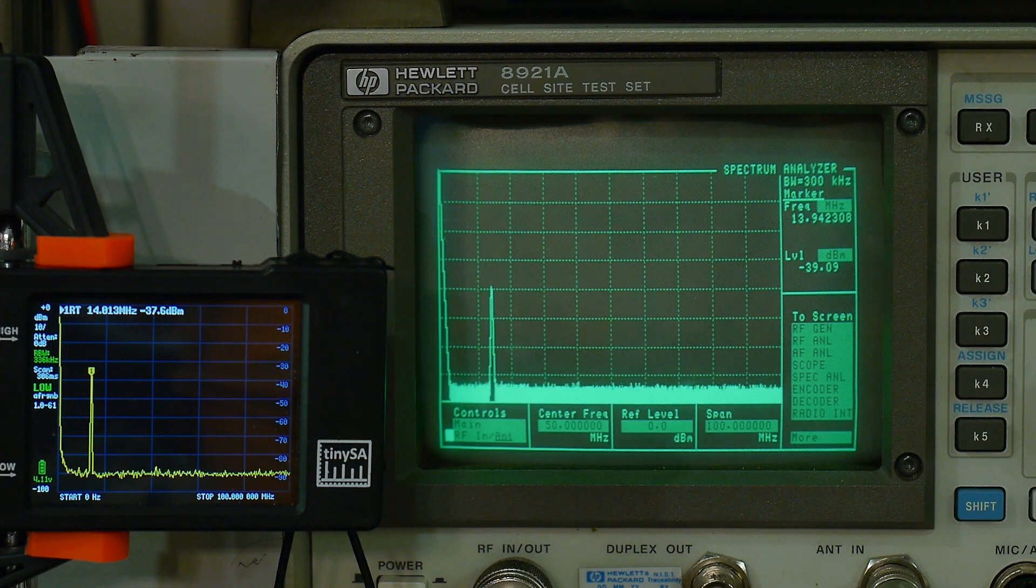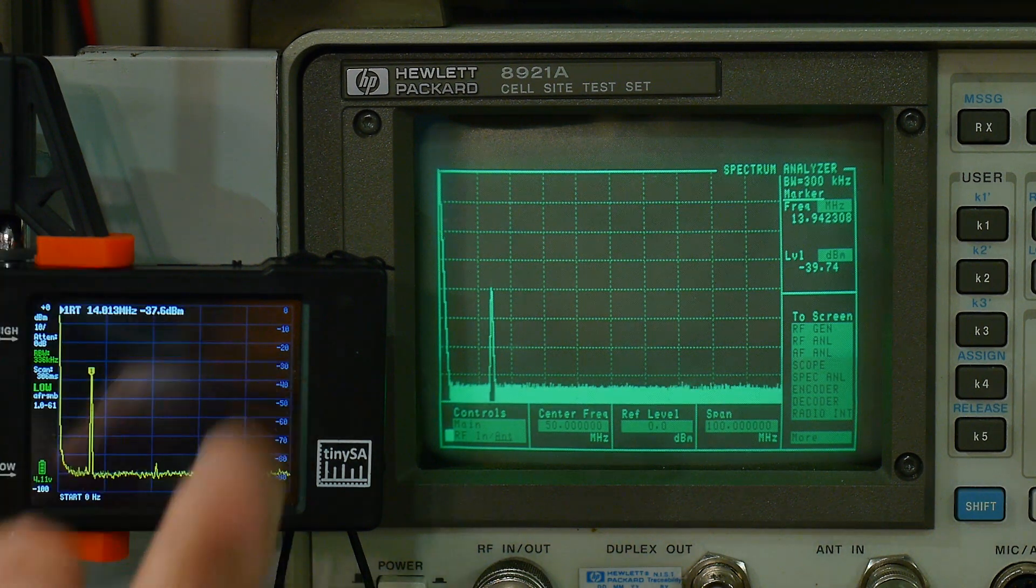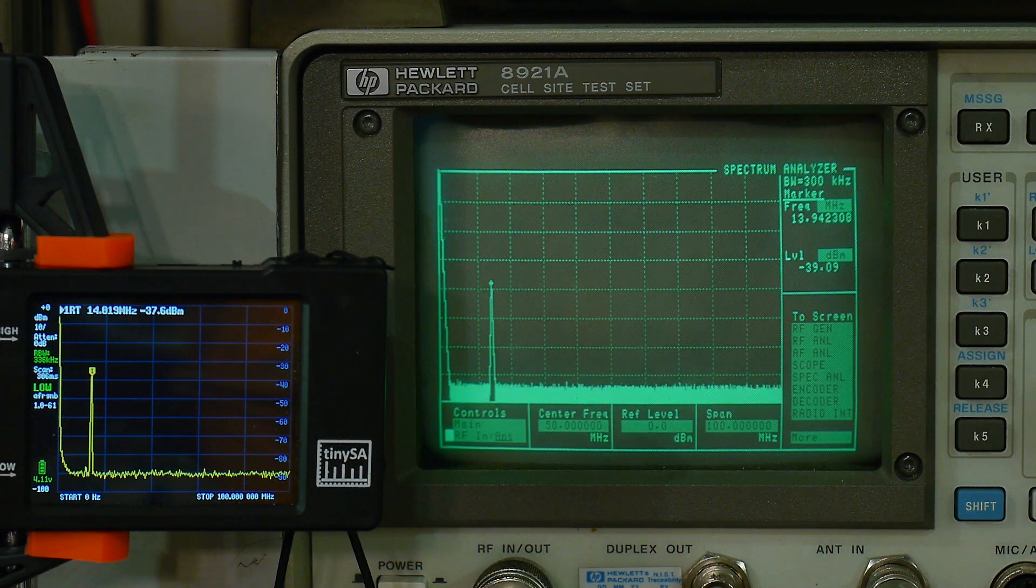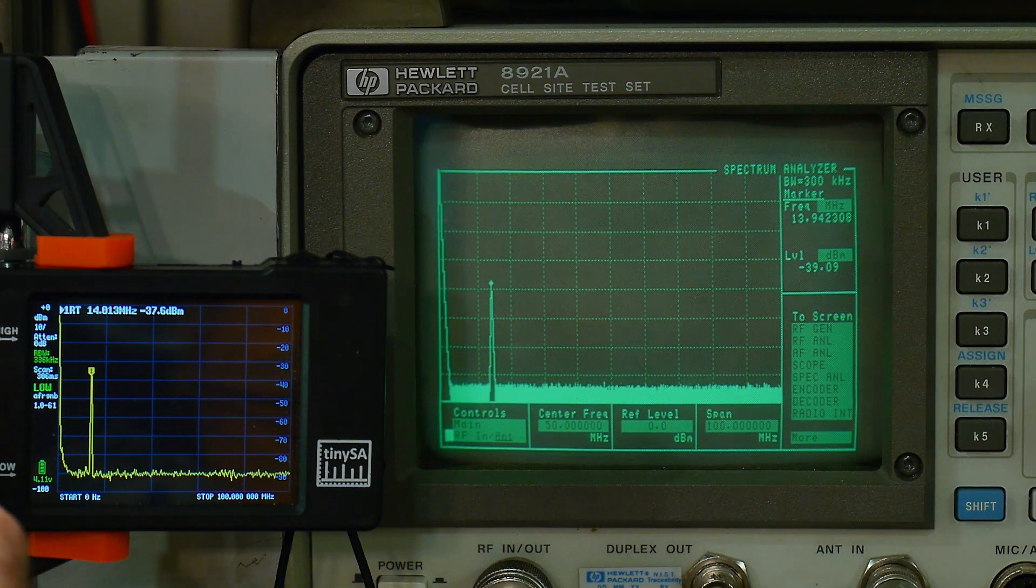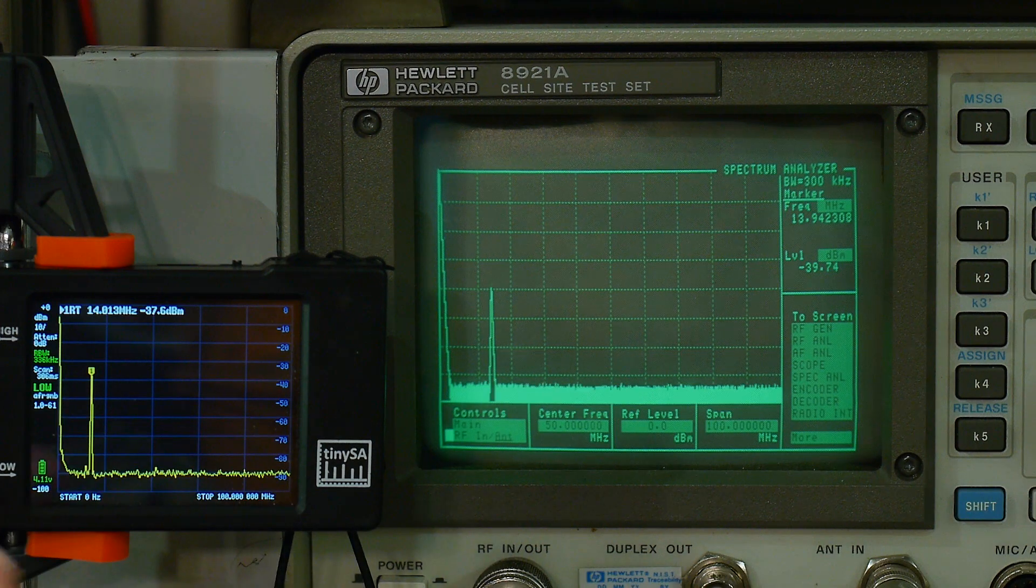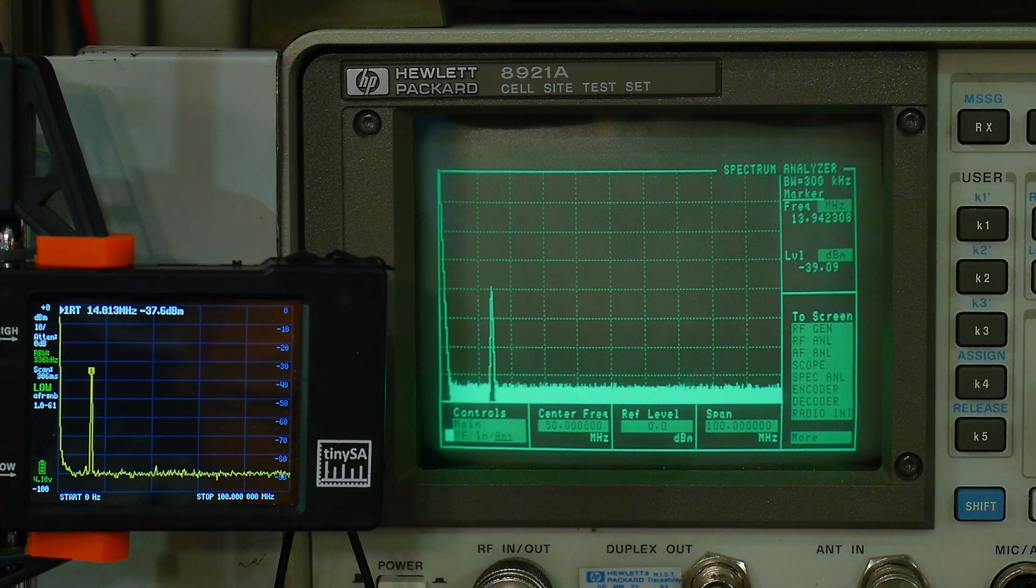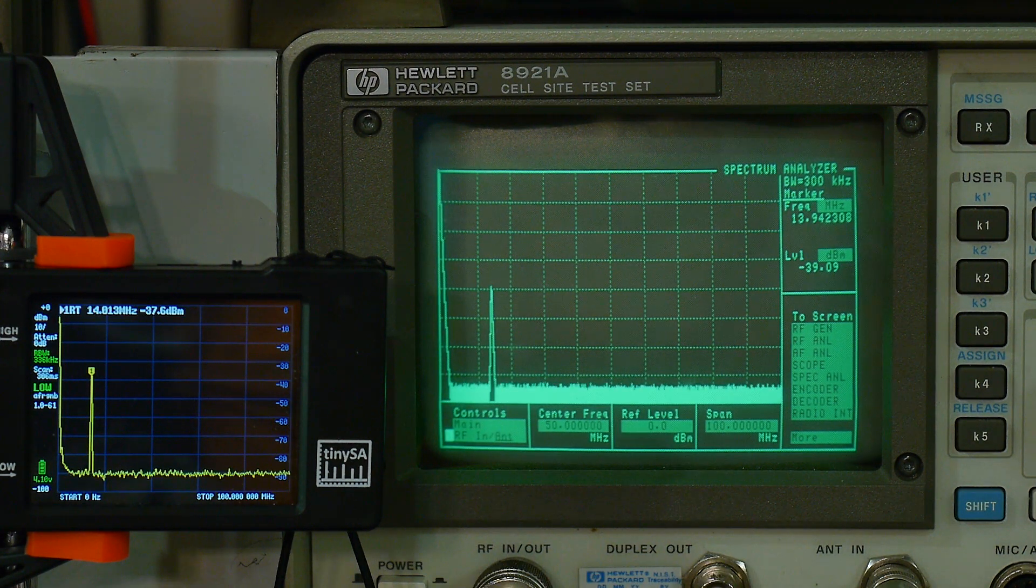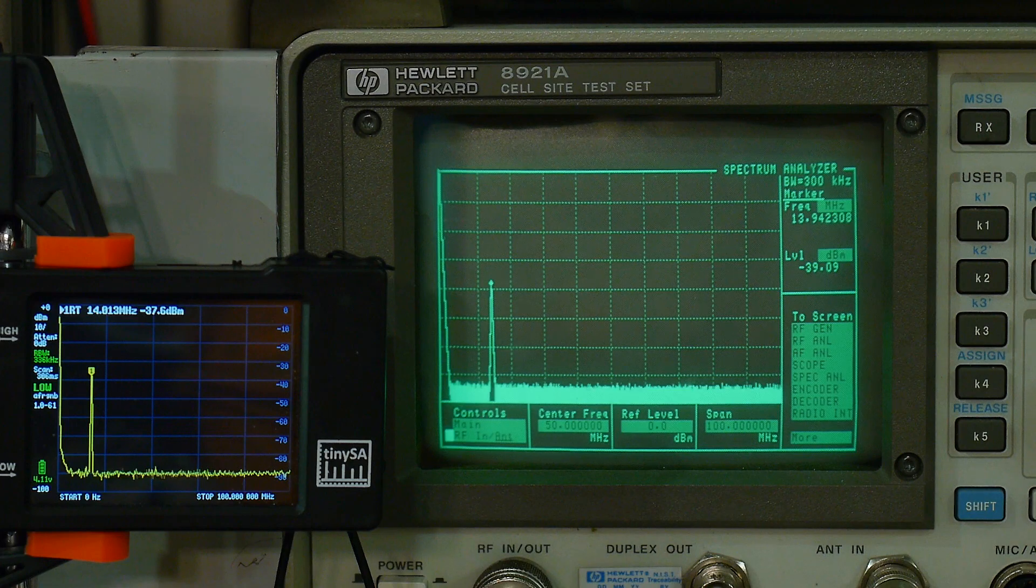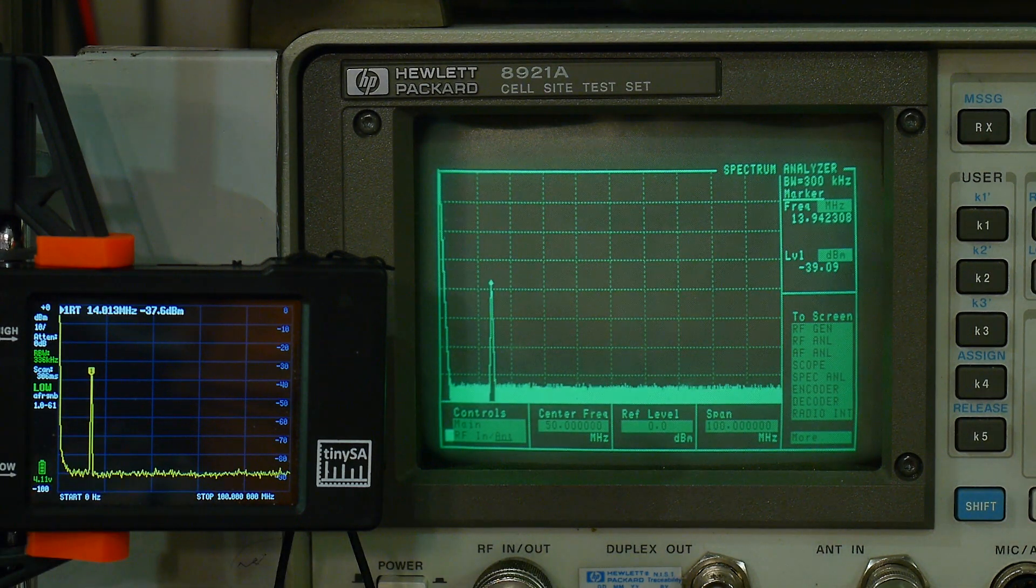Now I heard from one of the people who worked on the TinySA and he said that the harmonic should disappear at minus 30 dBm. So if you try to put in a signal larger than minus 30 dBm, then you'll start to see harmonics, but below minus 30 dBm everything should look clean. So let's test that out.